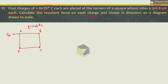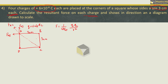Since all the charges have the same sign, they repel each other. The force on the charge at point A due to the charge at point B will be directed away from B, and likewise the force on charge A due to charge at D will be directed away from D.